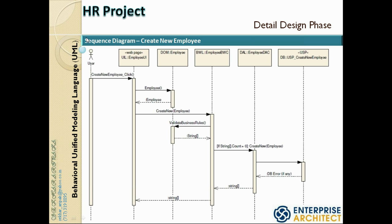Just to recap on the sequence diagram: this is the user hitting a UI with a click event. Upon the click event — this is for employee, but the same applies to department — it's going to create an instance of the department object, populate it, and pass it to the immediate tier called the BWC. The BWC then makes a call to the data access component in the data access layer, which is responsible for interacting with the database.